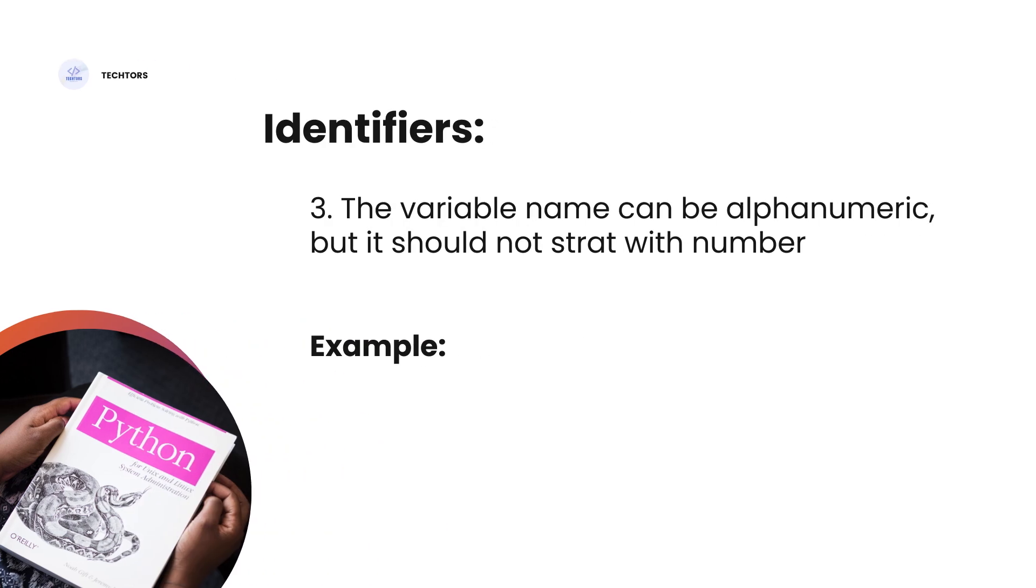The third identifier rule: The variable name can be alphanumeric, but it should not start with a number. What does this mean? Now, let's look at the variable name. We will start with variable name, but if we use the number, we will start with number.